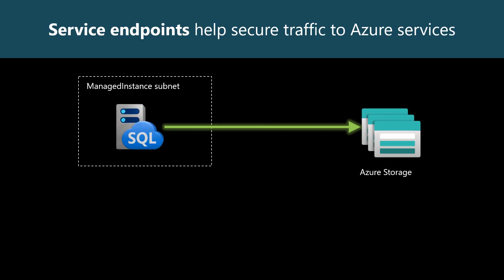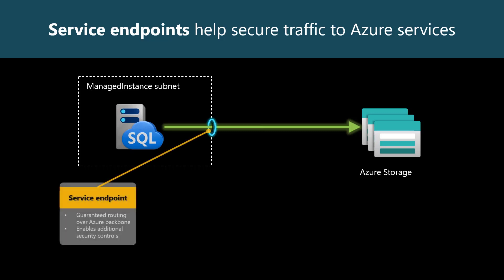To obtain this level of control, we must first route our outbound connections to Azure Storage through a single point called a service endpoint. It collects all traffic from our subnet to Azure Storage, establishes a priority route over the Azure backbone network, and enables additional security controls.